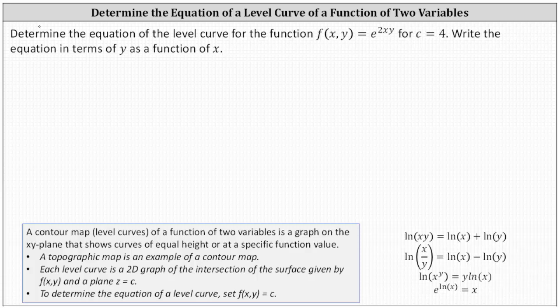To determine the equation of a level curve, we set f(x,y) equal to c. Remember, every level curve is a 2D graph of the intersection of the surface given by f(x,y) in a plane z = c, or in our case, c equals 4.